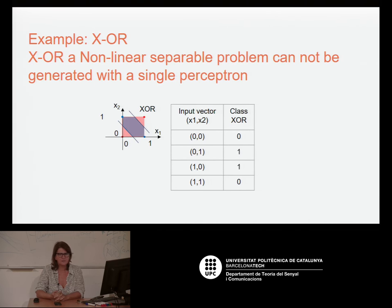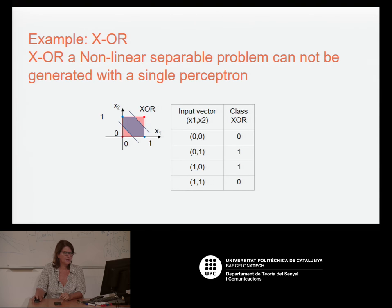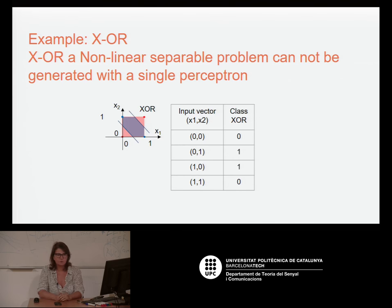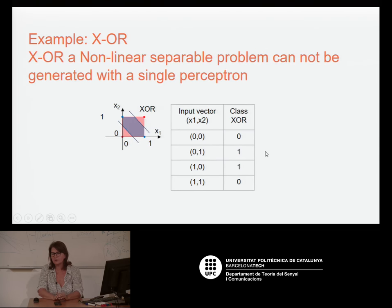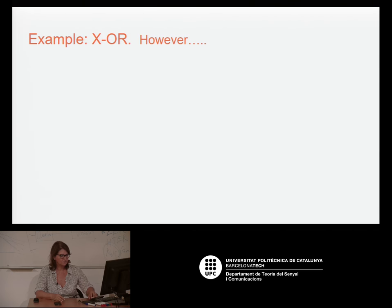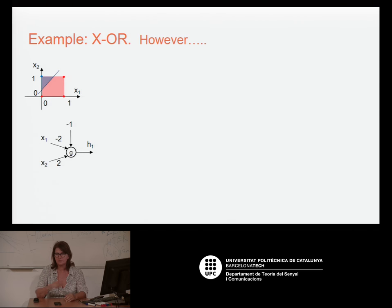Now let's try to find one perceptron that does the exclusive OR — which is 0 when both inputs are 0 or both are 1, and 1 when you have one of each: 0,1 or 1,0. There is no way to build one perceptron, no weights, no bias that will solve the exclusive OR. But we can do something — this leads to the multi-layer perceptron.